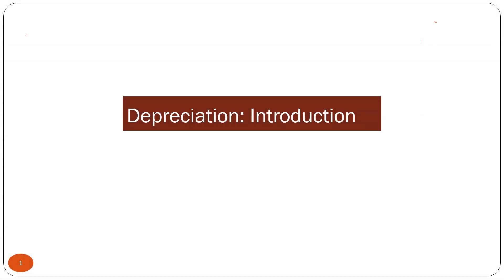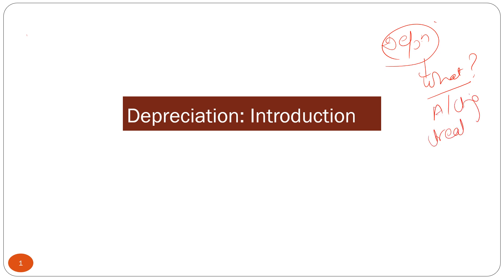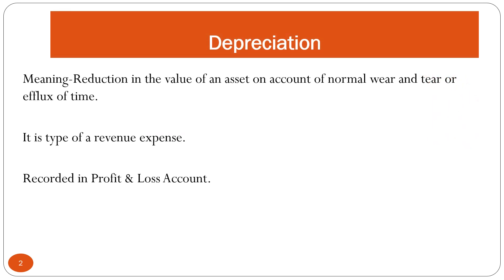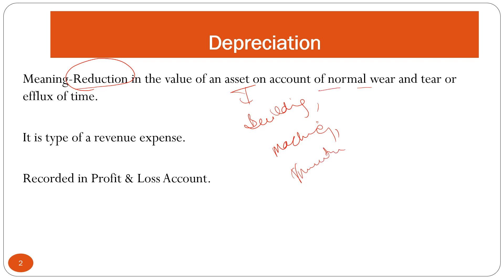Welcome back. In this presentation we learn about depreciation — what is depreciation and what is the accounting treatment of depreciation in the books of accounting. Depreciation can be understood as a reduction in the value of an asset. This asset can be your building, your machinery, or your furniture, on account of normal wear and tear due to normal usage of the asset or the passage of time.